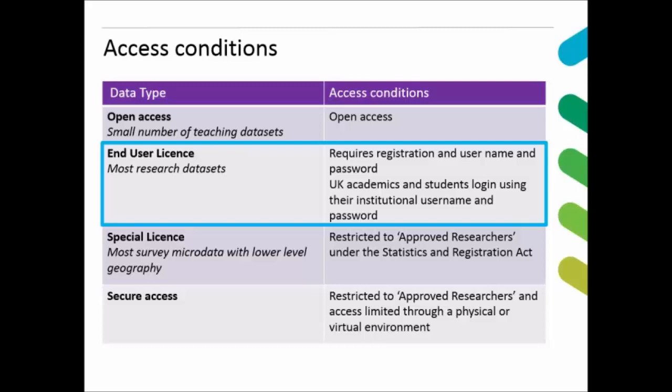To get data under end user licence, you just register with the UK Data Service and then you can download all these studies for free. Registration is quick and easy and takes about five minutes. People from abroad can register as well — it may take a little longer and you have to request a username and login from the UK Data Archive. The data are freely accessible and we do not charge for our data unless it's for commercial use.